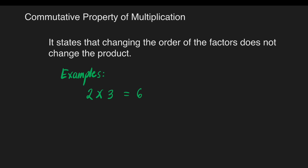we are going to change the order of the factors and make it 3 times 2, or 3 groups of 2. The answer is still 6. Another example: 7 times 4 is equal to 28. We have also 4 times 7, or 4 groups of 7, is also 28. It simply means that the order of the factors does not change the product.